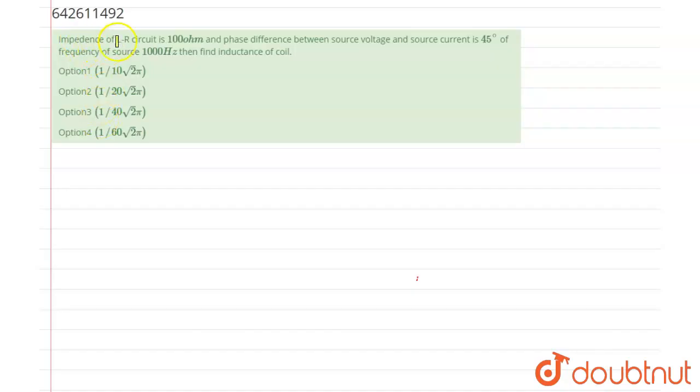The question is from alternating current. According to the question, impedance of an LR circuit is 100 ohm, and the phase difference between the source voltage and source current is equal to 45 degrees. Now, if the frequency of the source is 1000 Hertz, we have to find the inductance of the coil.